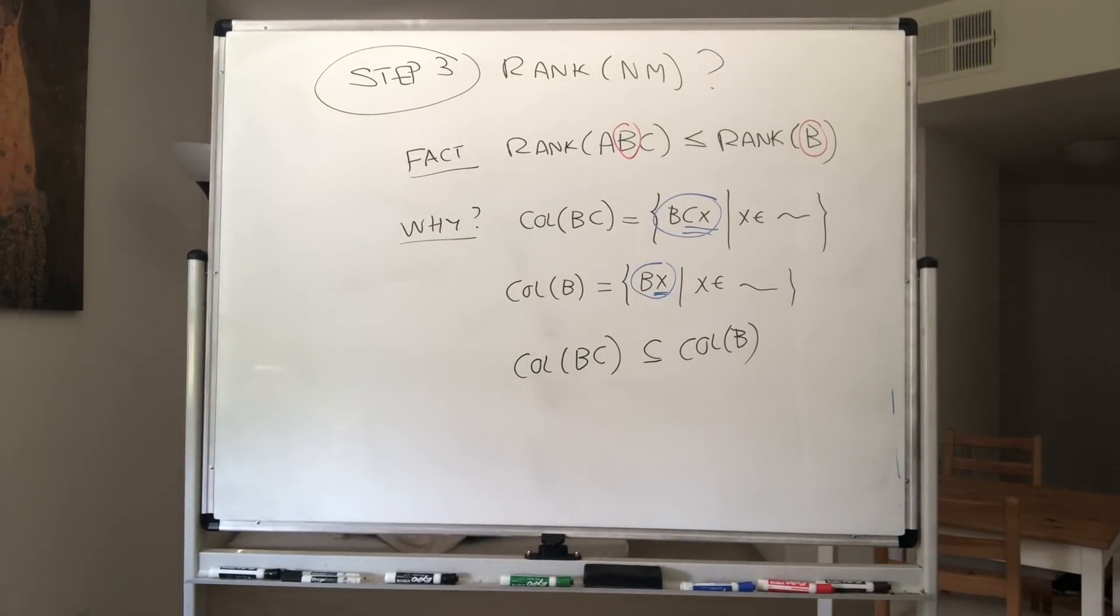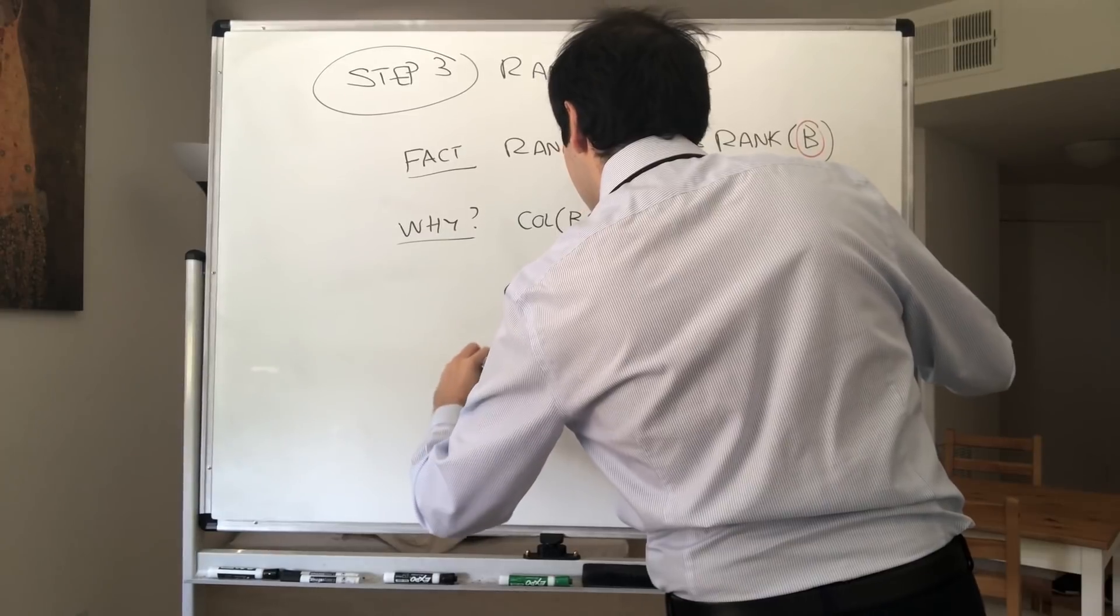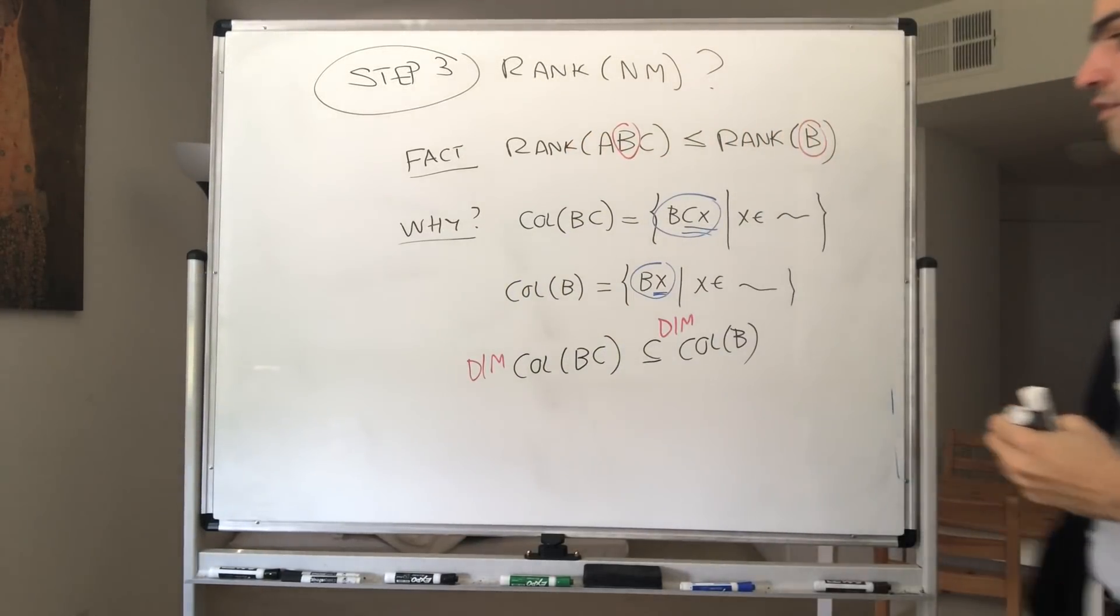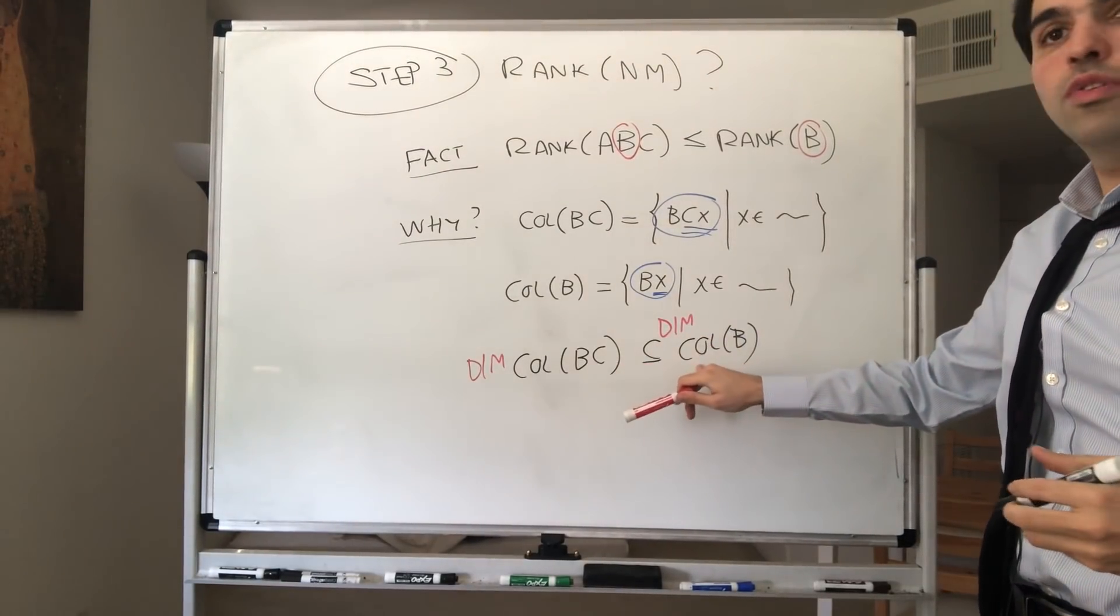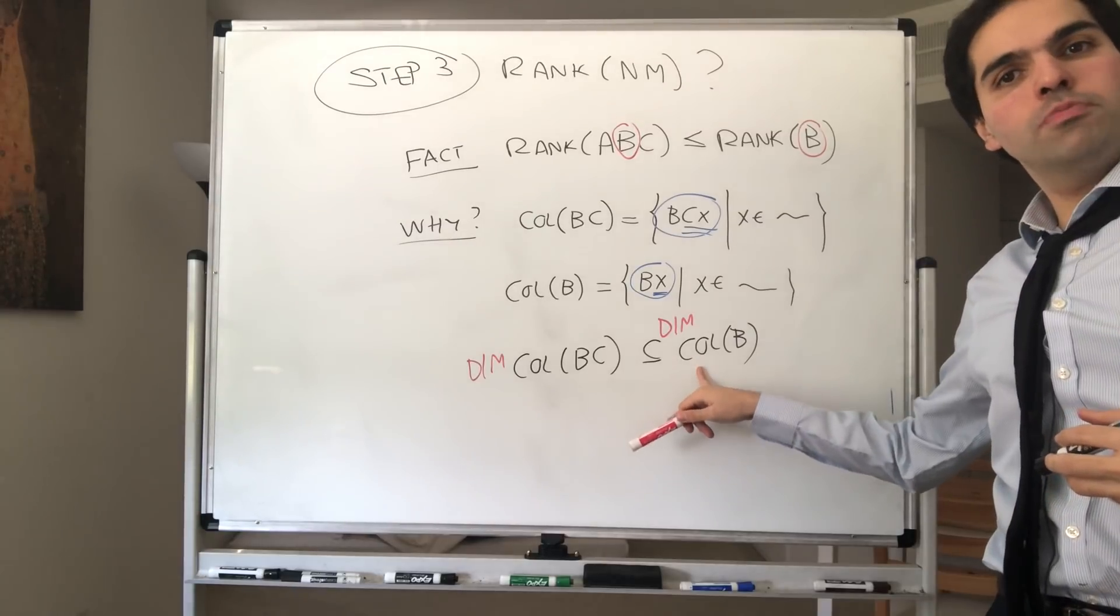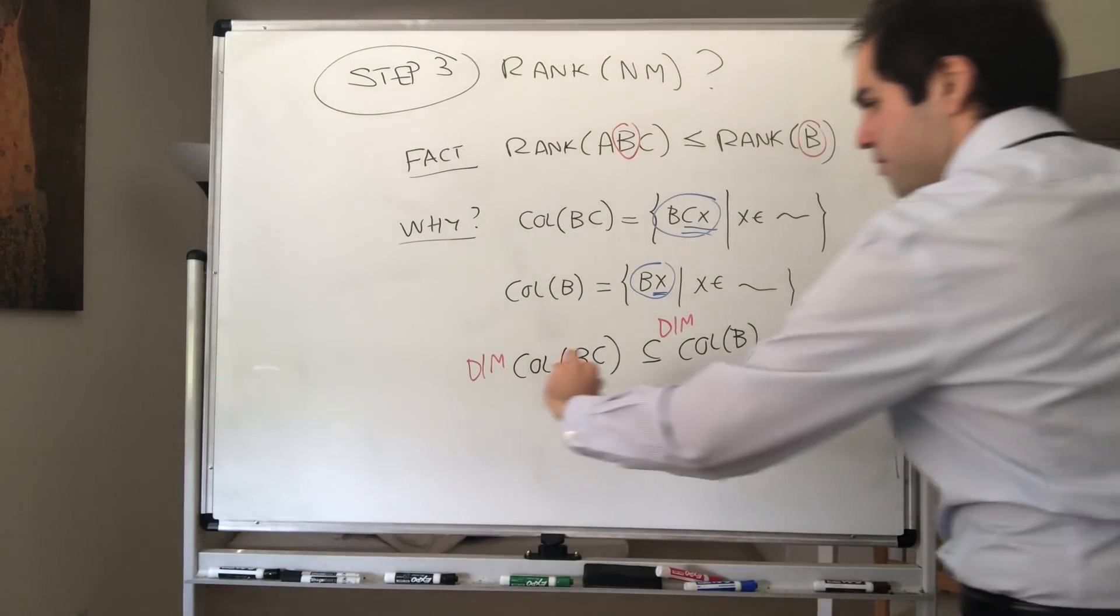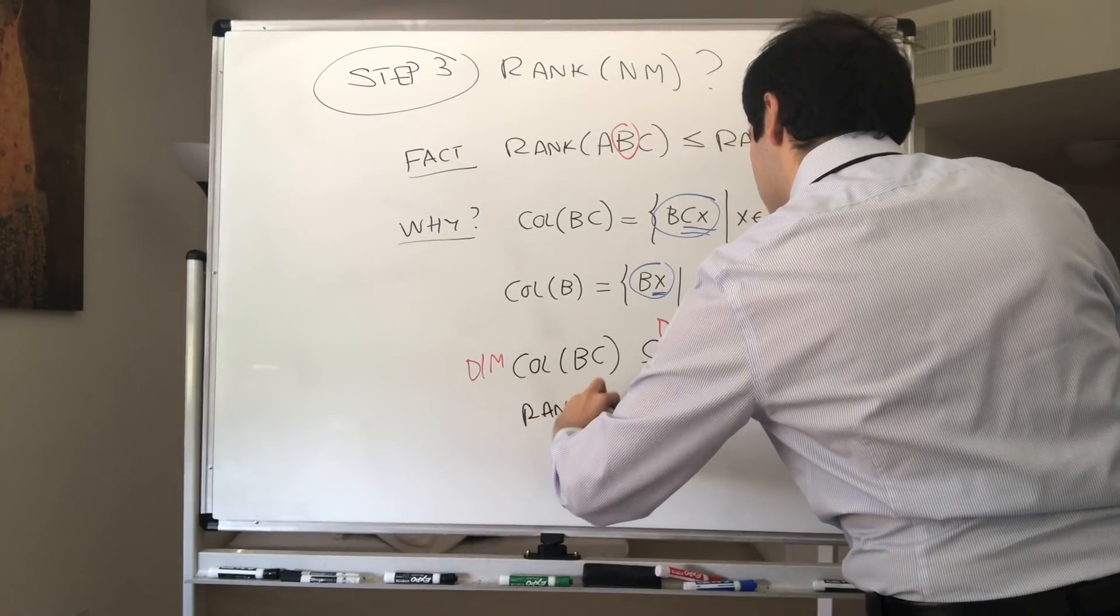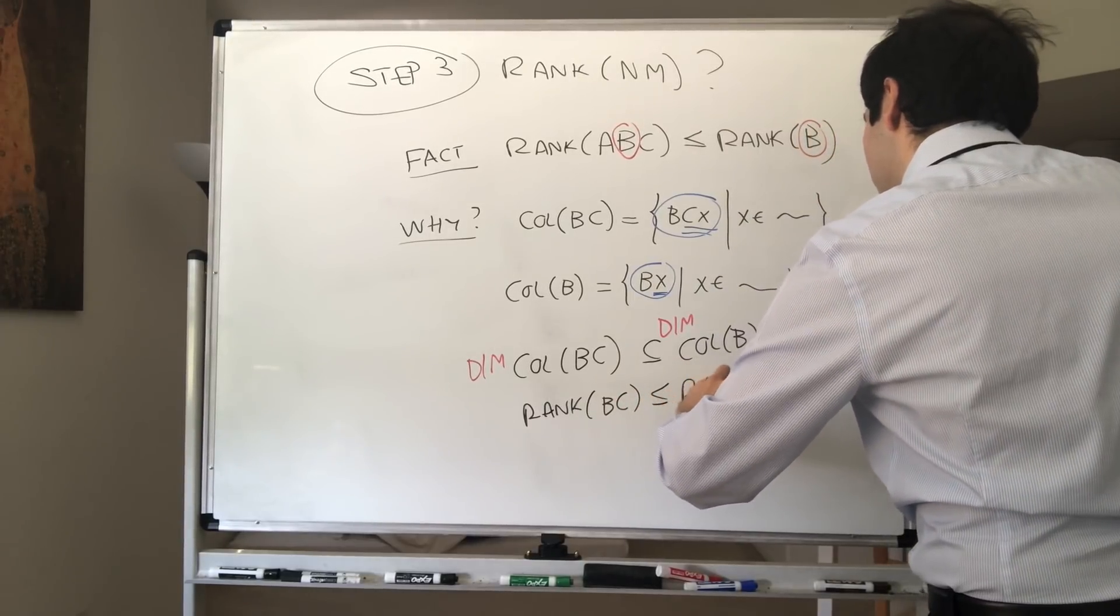So in particular, we do have an inclusion going on here. We have that the column space of BC is included in the column space of B. Therefore, if you take dimensions of this, then you get that the dimension of the column space of BC is less than or equal to the dimension of the column space of B. But this just means that the rank of BC is less than or equal to the rank of B.